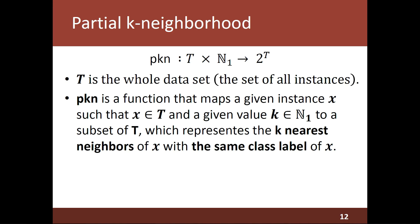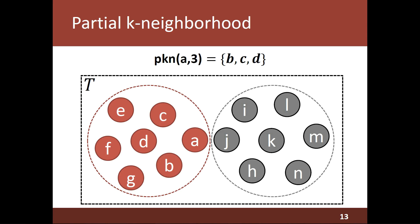Another notion that is important for our approach is the notion of partial K neighborhood. The partial K neighborhood of a given instance X is the set of the K nearest neighbors of X with the same class label of X. In our approach, the partial K neighborhood of X is provided by the function PKN. In this example, we can see the partial K neighborhood of the instance A. The resulting set in this case is B, C, and D. Notice that although the instance J is closer to A than the instance D, it is not included in the partial K neighborhood of A because it belongs to a different class.